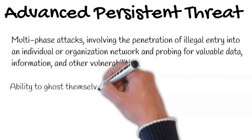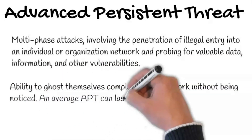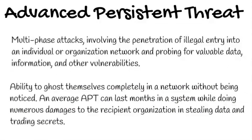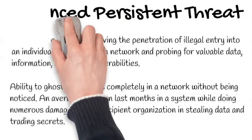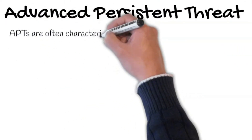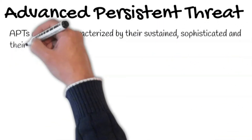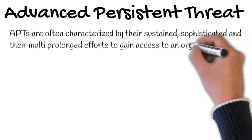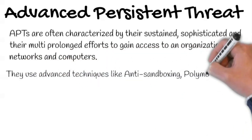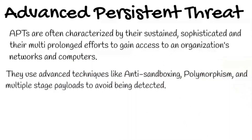The most remarkable thing about APT is their ability to embed themselves completely in a network without being noticed. An average APT can last months in a system while doing numerous damages to the recipient organization in stealing data and trading secrets. APTs are often characterized by their sustained, sophisticated, and multi-prolonged efforts to gain access to an organization's networks and computers. They use advanced techniques like anti-sandboxing, polymorphism, and multiple-stage payloads to avoid being detected.